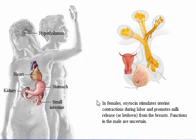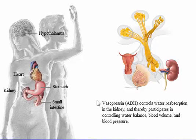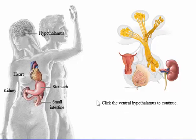In females, oxytocin stimulates uterine contractions during labor and promotes milk release or letdown from the breasts. Functions in the male are uncertain. Vasopressin controls water reabsorption in the kidney and thereby participates in controlling water balance, blood volume, and blood pressure. Click the ventral hypothalamus to continue.